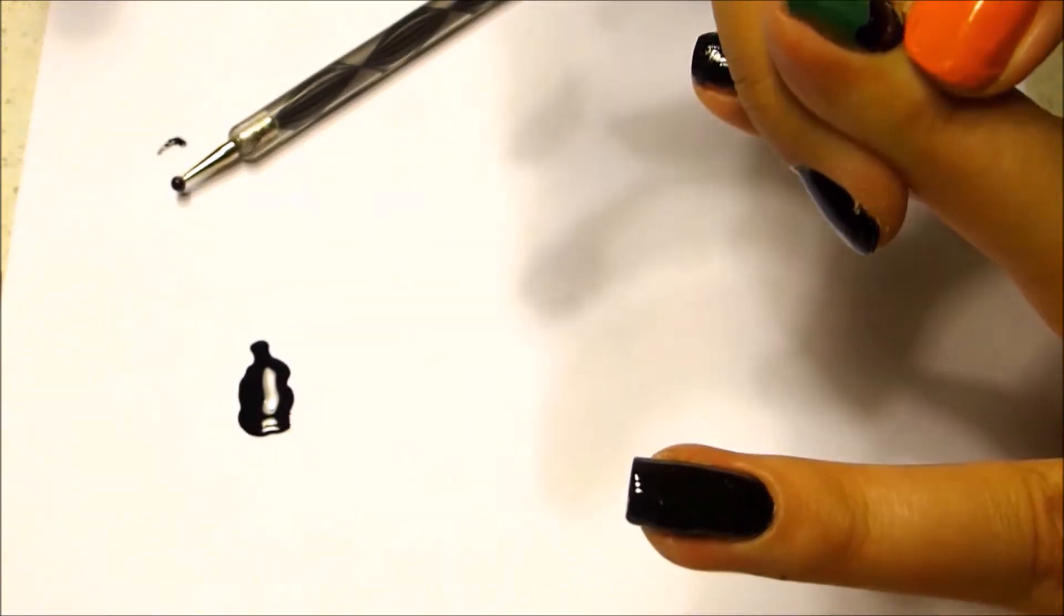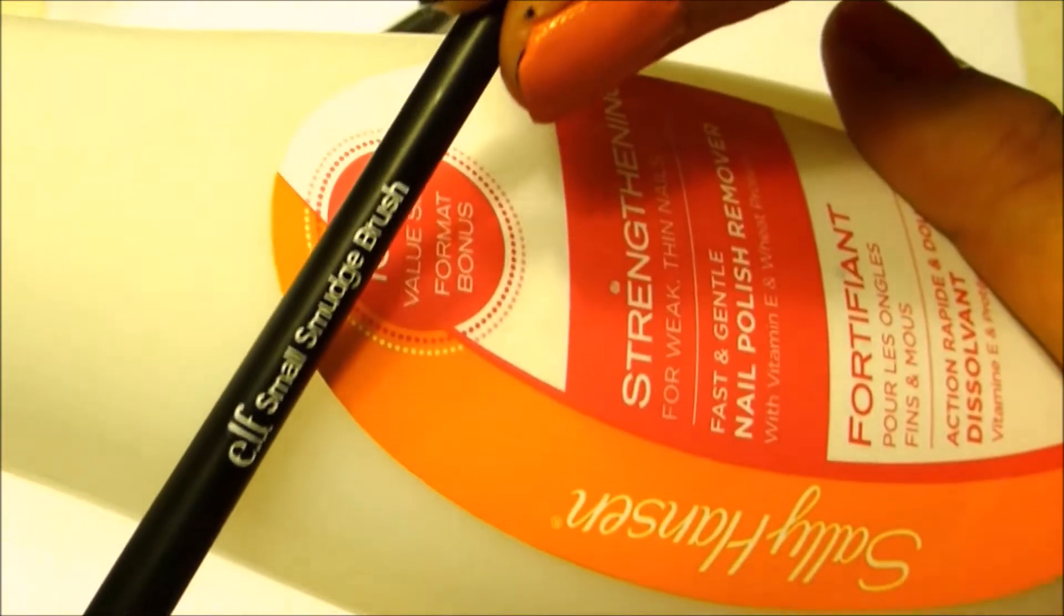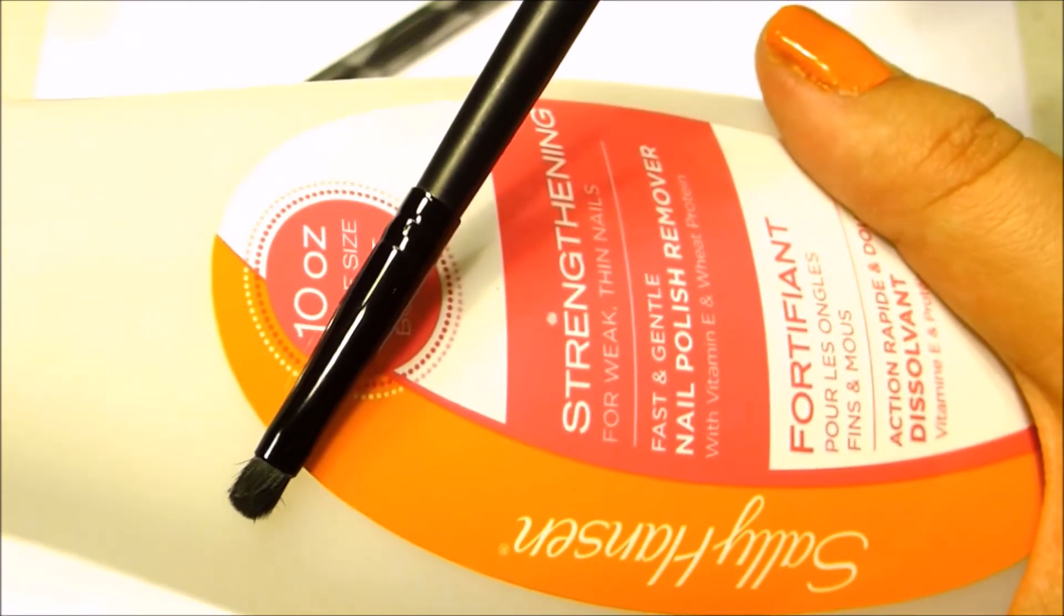It's also handy to have some nail polish remover on hand with a small brush, and I'm just going to run that around my cuticle to clean it up.